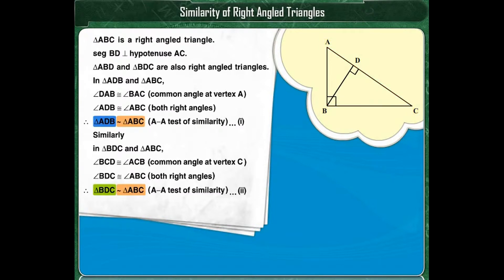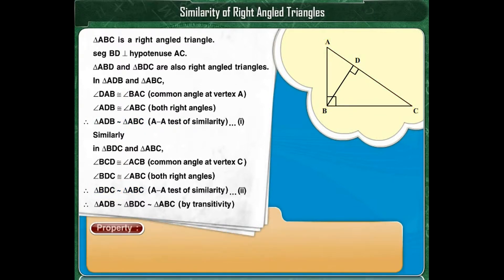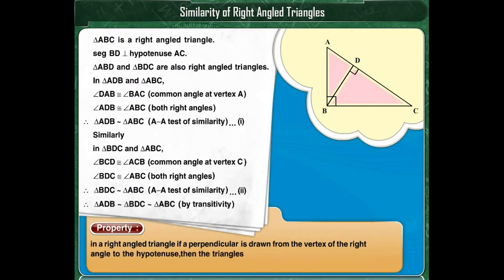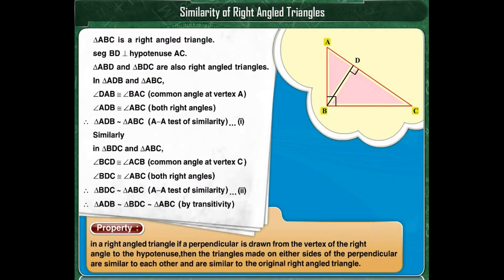So by transitivity, we can say that triangle ADB is similar to triangle BDC, which is similar to triangle ABC. We can state this property as: in a right-angled triangle, if a perpendicular is drawn from the vertex of the right angle to the hypotenuse, then the triangles made on either side of the perpendicular are similar to each other and to the original right-angled triangle.